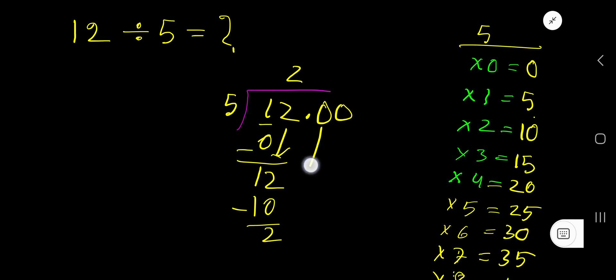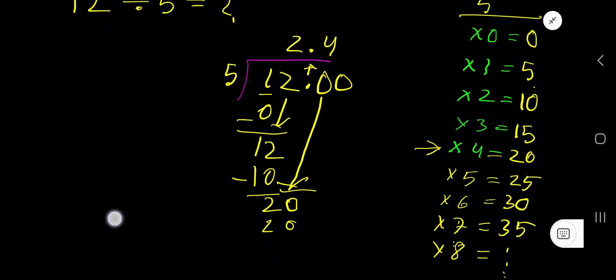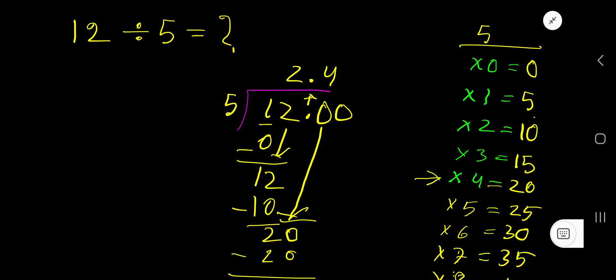Bring down the first 0. But before this 0, there is a decimal. Decimal must come to the quotient directly. 5 goes into 20 how many times? 4 times. Write 4. 4 times 5 is 20. Subtract, 0. So 2.4 is your answer.